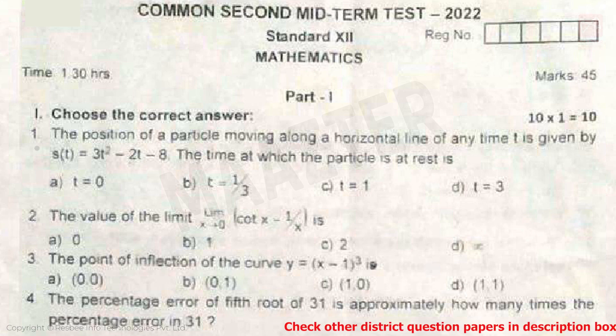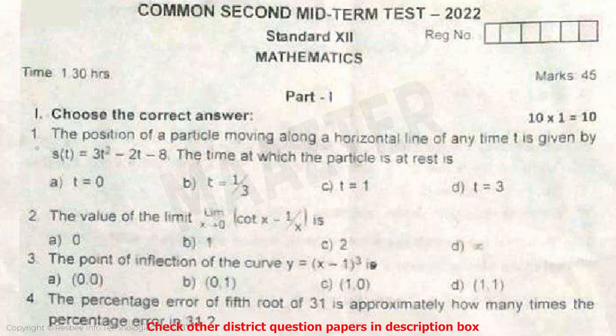Question 1: The position of a particle moving along a horizontal line at any time t is given by s(t) = 3t² - 2t - 8. The time at which the particle is at rest is...